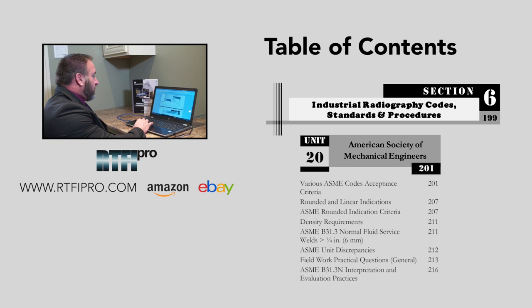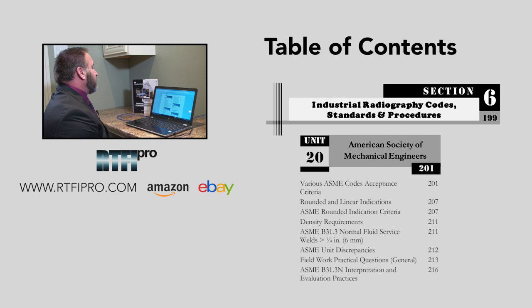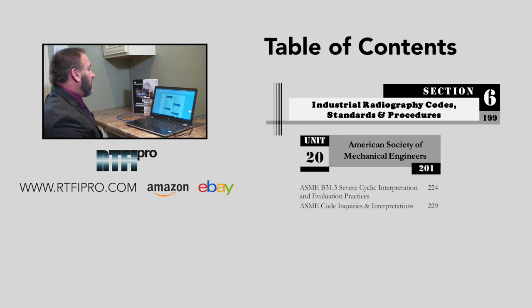We're now addressing section six: industrial radiography code standards and procedures. Unit twenty covers ASME — American Society of Mechanical Engineers — including various ASME code acceptance criteria, rounded and linear indications, ASME rounded indication criteria, density requirements, ASME B31.3 Normal Fluid Service welds greater than quarter inch or six millimeters, ASME unit discrepancies, field work and practical questions, general ASME B31.3 Normal Interpretation Evaluation Practices, and ASME B31.3 Severe Cyclic Interpretation Evaluation Practices.